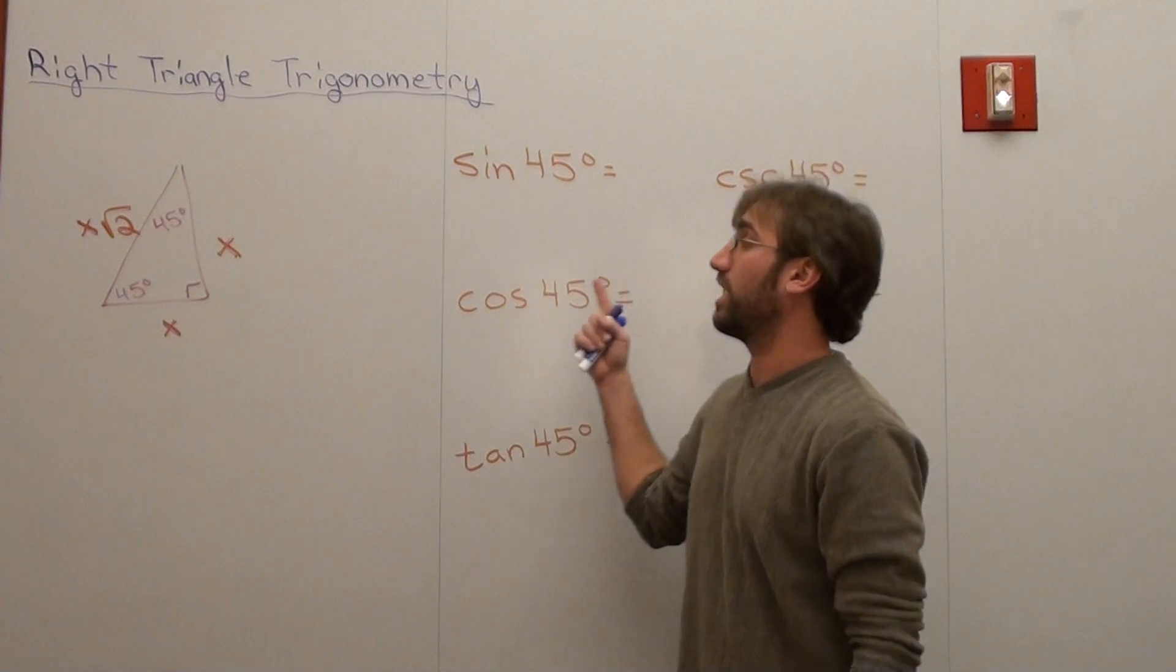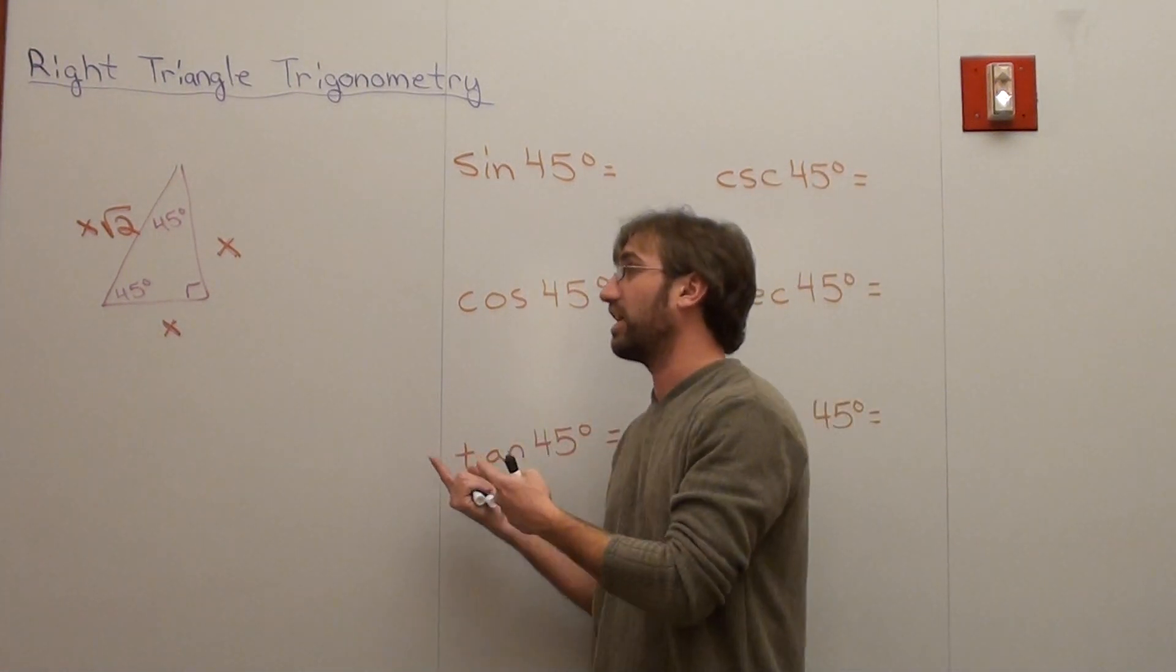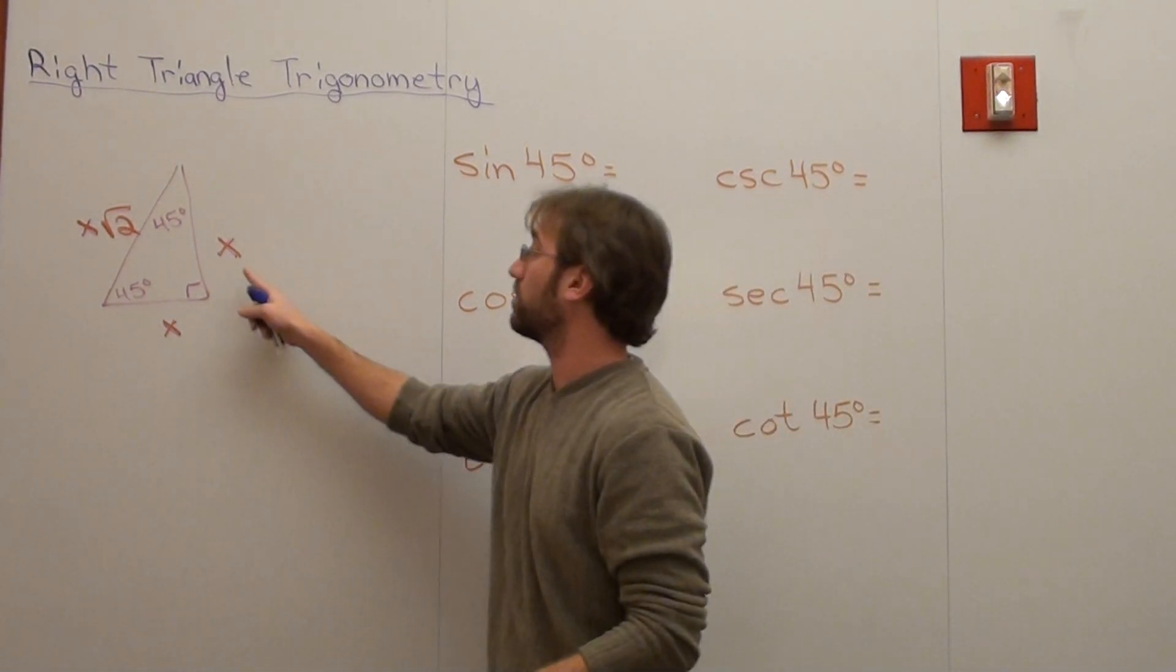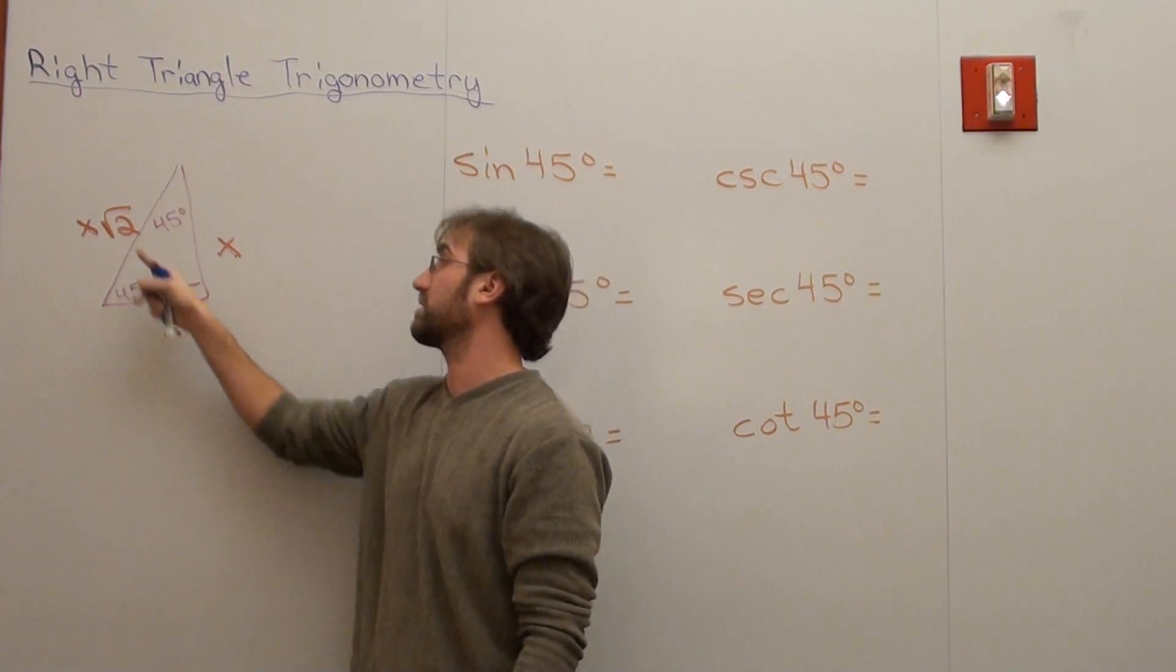Hello again, right triangle trigonometry, except now we're working with a 45-45-90 triangle. Here's the general formula: x, x, x root 2.